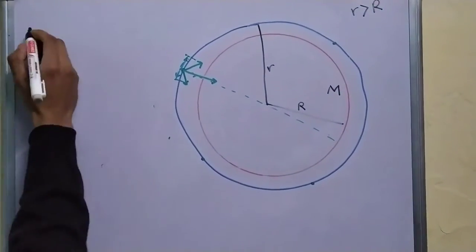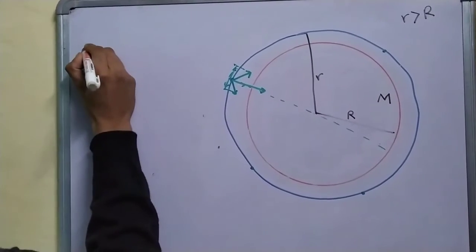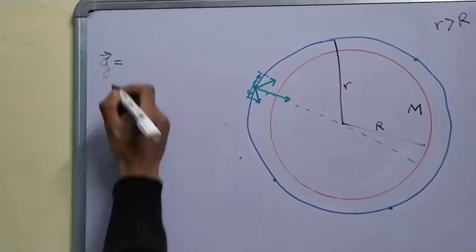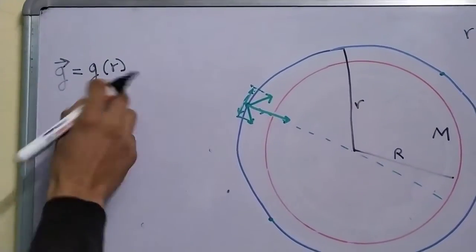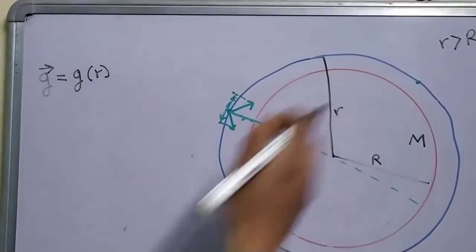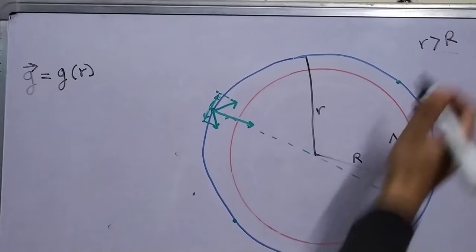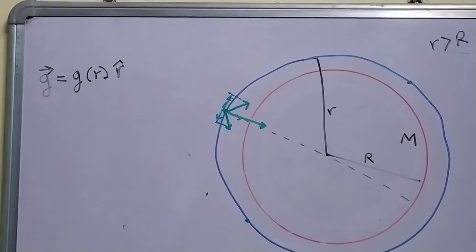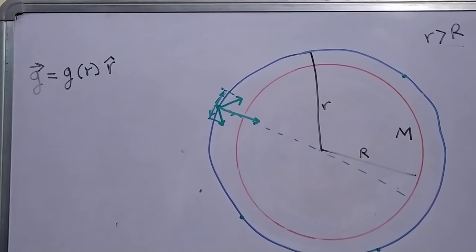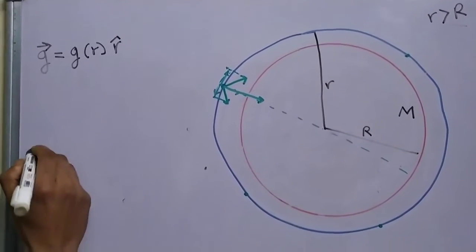From this we find that your gravitational field G has to be of the form G of R, the magnitude as a function of R, and R is greater than the radius in the R cap direction. And now we shall use the Gauss law.